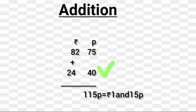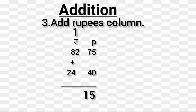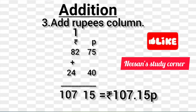115 paise is equal to 1 rupee and 15 paise. So we write 15 paise in the paise column and carry 1 rupee to the rupees column. Step 3: Adding the rupees column — 82 plus 24 plus 1 equals 107. At last, we get 107 rupees and 15 paise.